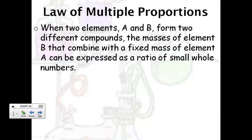The next law is the law of multiple proportions. It states that when two elements, A and B, form two different compounds, the masses of element B that combined with a fixed mass of element A can be expressed as a ratio of whole numbers.